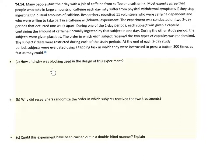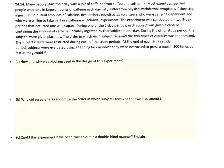Part A: How and why was blocking used in this experiment? This is a great example of matched pairs, which is a method of blocking. It is considered matched pairs because each participant took the caffeine tablets in one session and the placebo in the other. The participant is the block themselves, given two different treatments. You compare the results of the two treatments on each of the 11 individual volunteers.